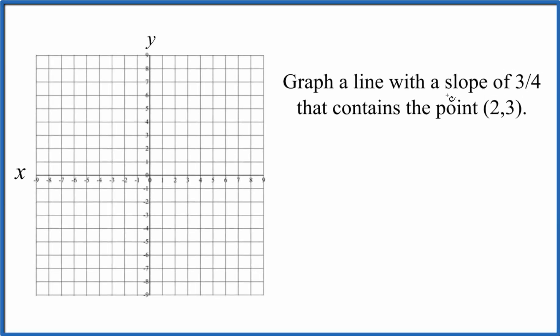If you're asked to graph a line where you have the slope of 3 fourths and the line contains the point 2 comma 3, here's how you can do that.